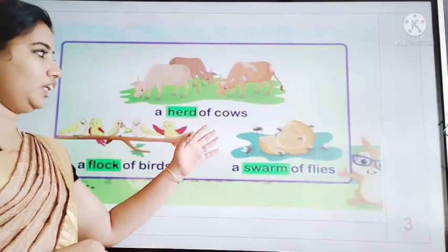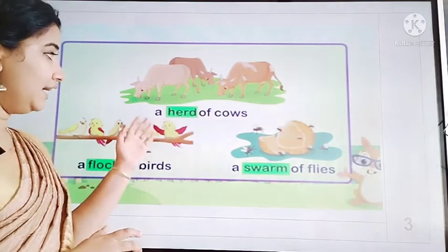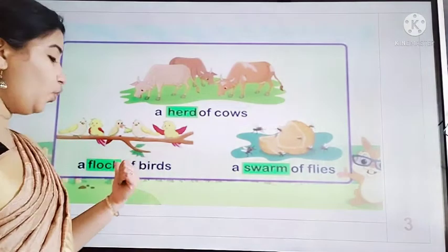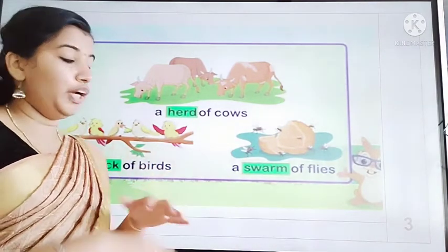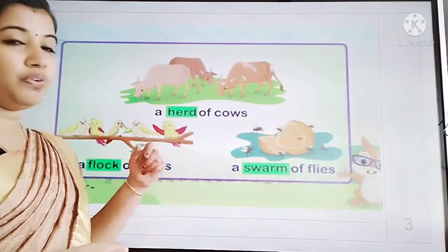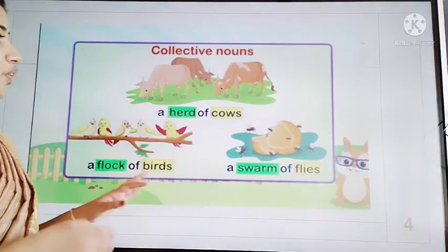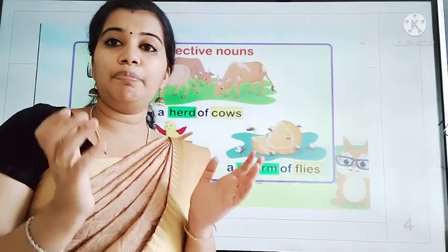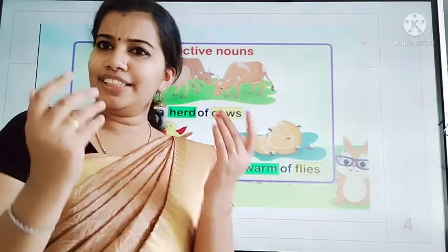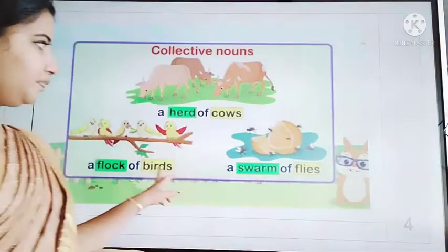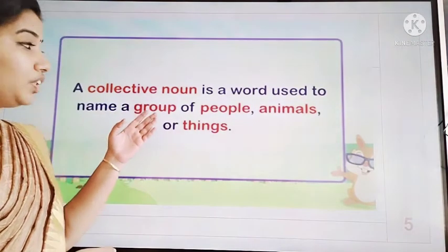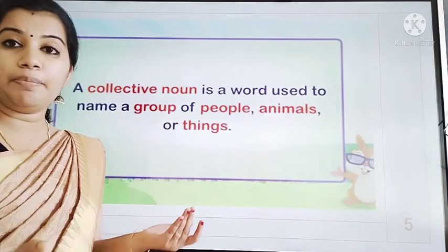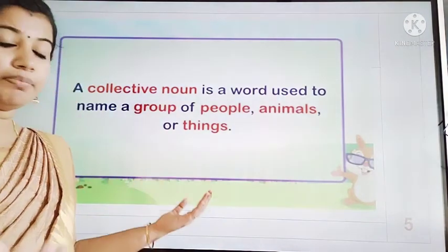A group of cows we say a herd of cows; a group of birds we say a flock of birds; a group of flies we say a swarm of flies. So these are some examples. Collective noun — this is one type of noun. What is a collective noun? A collective noun is a word used to name a group of people, animals, or things.